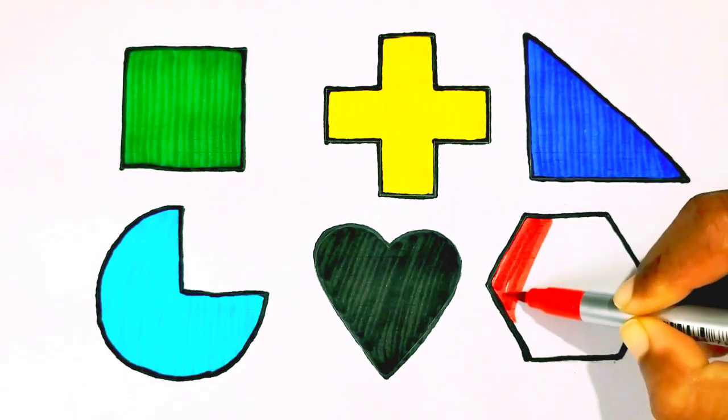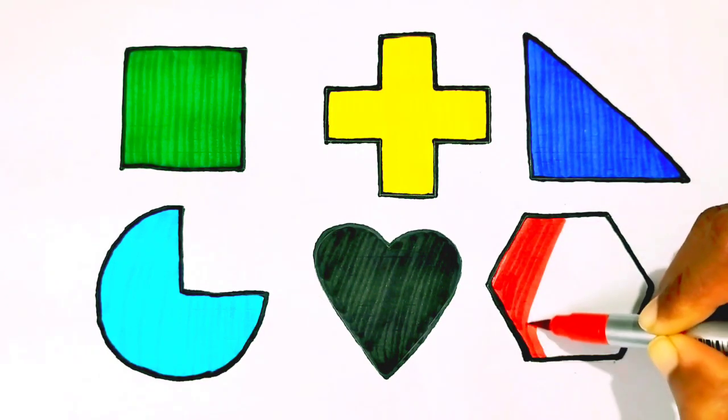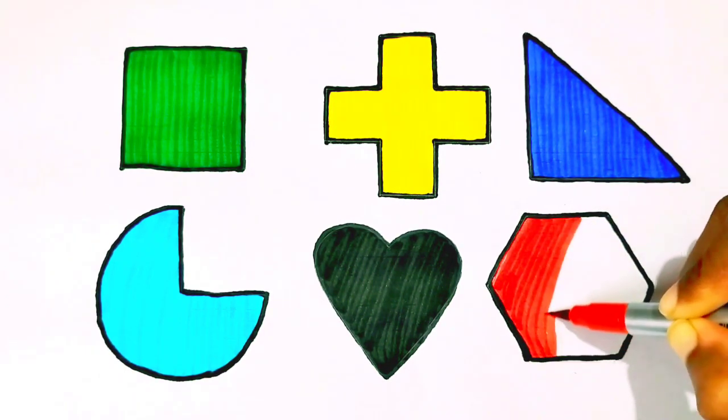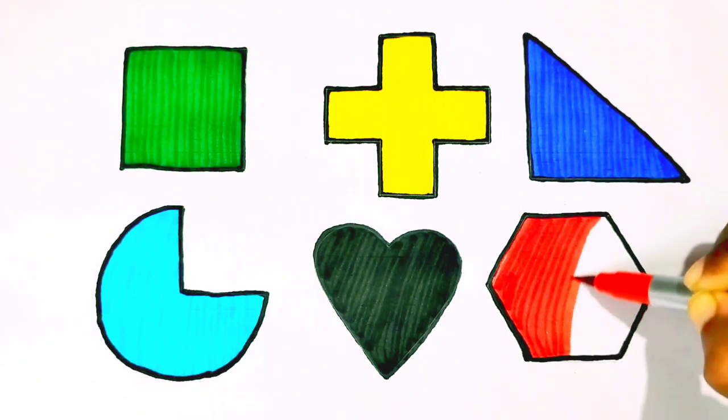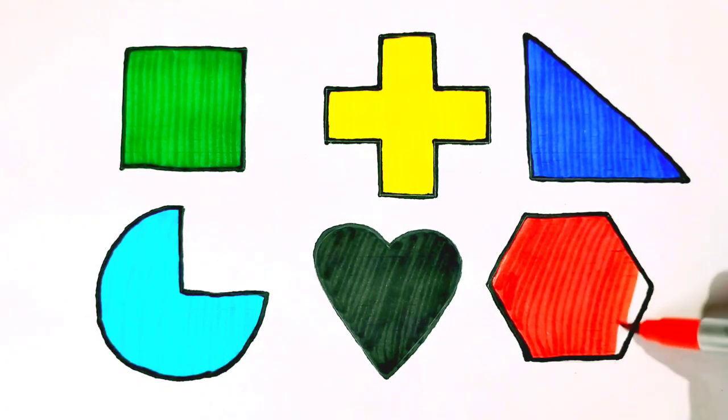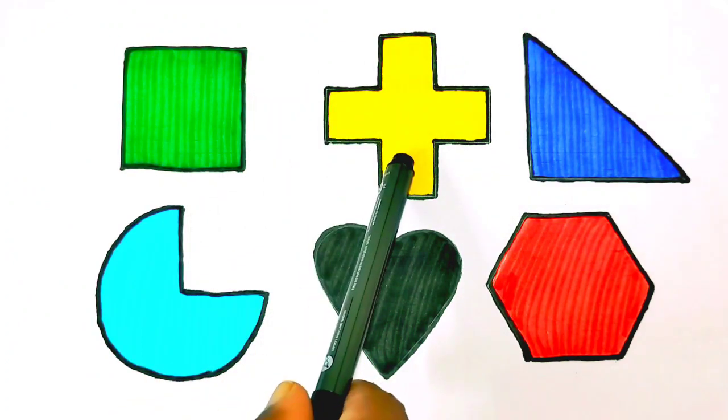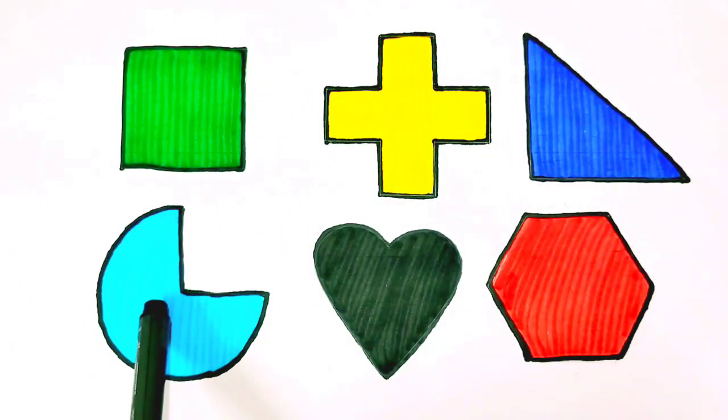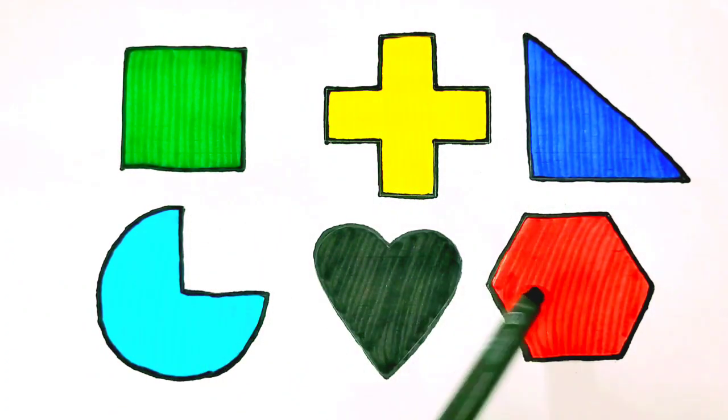A-B-C-D-E-F-G H-I-J-K-L-M-N-O-P Q-R-S-T-U-V W-X-Y-N-Z. Red color hexagon. Now I know my ABC's. Square, Cross, Red triangle, Pi, Heart, Hexagon.